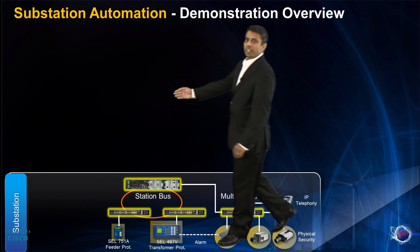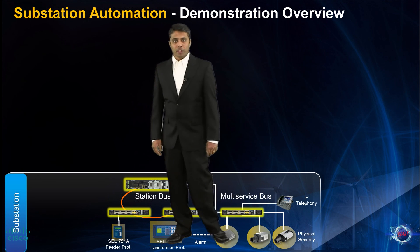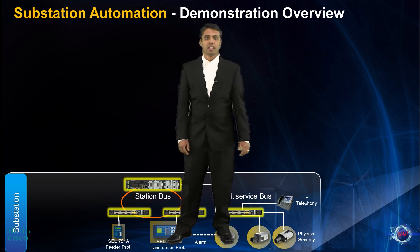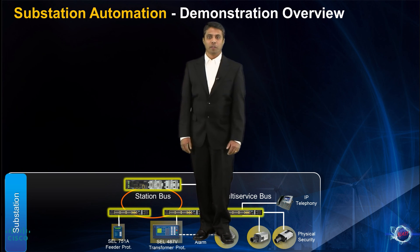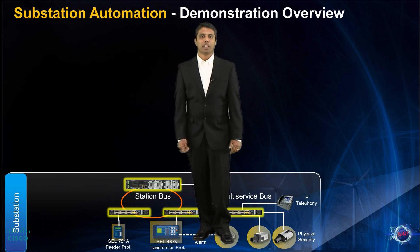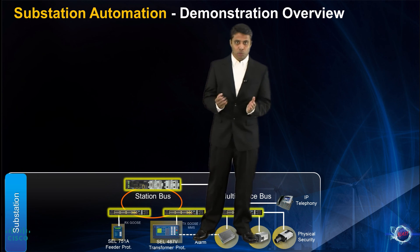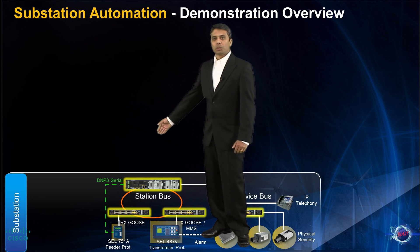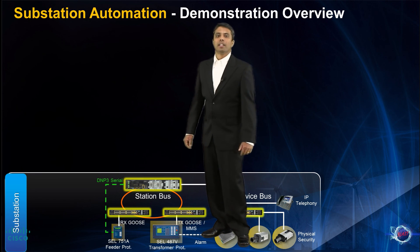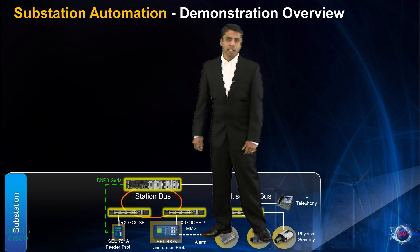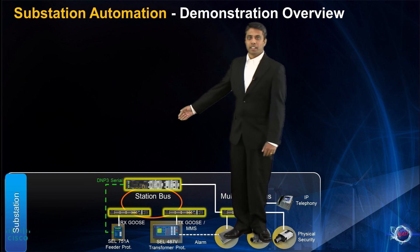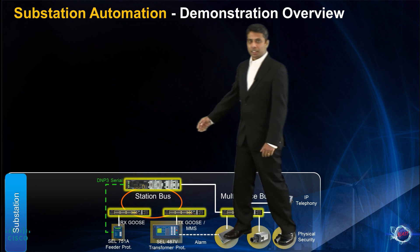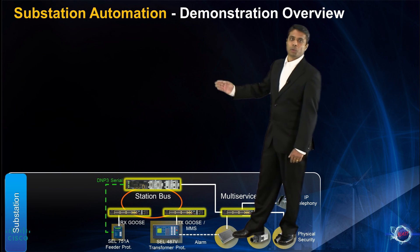The ring topology enables a high bandwidth gigabit ethernet fiber ring with fast convergence capabilities suitable for protection and control devices using IEC61850 protocols like GOOSE and MMS. Relays with legacy RS232 interfaces using DNP3 to communicate can be accommodated by connecting them directly to the connected grid router's serial ports and tunneling the raw serial data over the IP network.